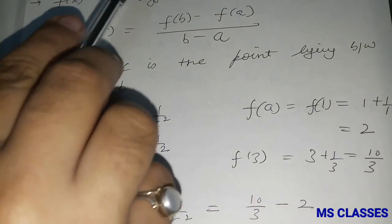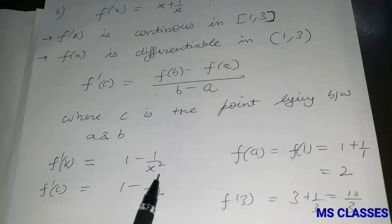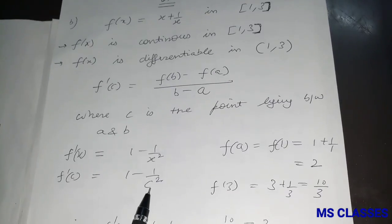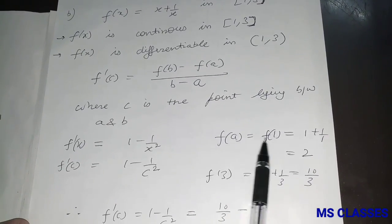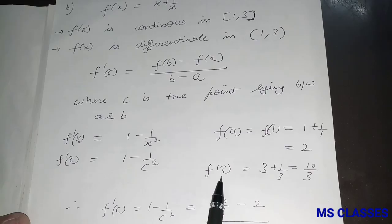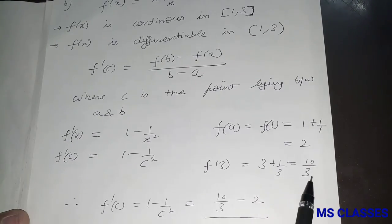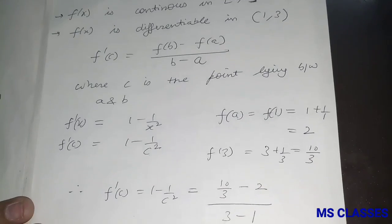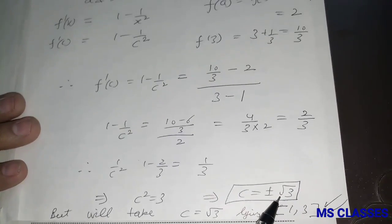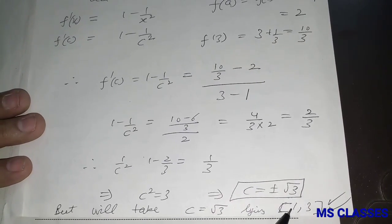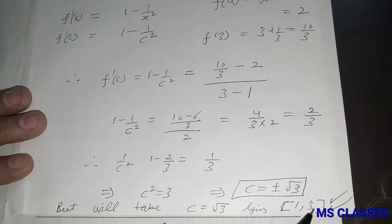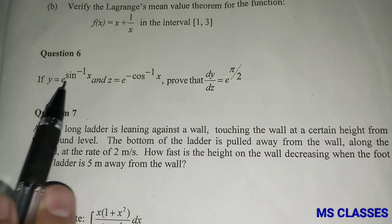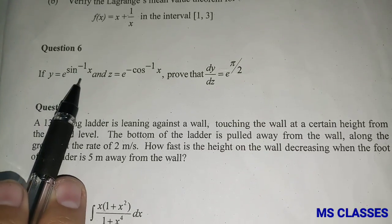Differentiating f(x) = x + 1/x gives f'(x) = 1 - 1/x², so f'(c) = 1 - 1/c². Here f(1) = 2 and f(3) = 10/3. Substituting all values into the LMVT formula and solving, we get c = ±√3. Since c = -√3 does not lie in [1, 3], we take c = √3.